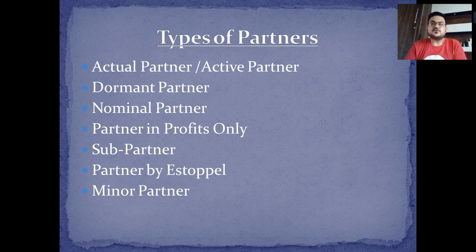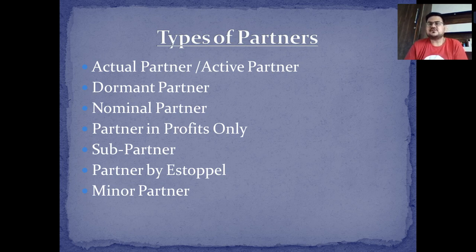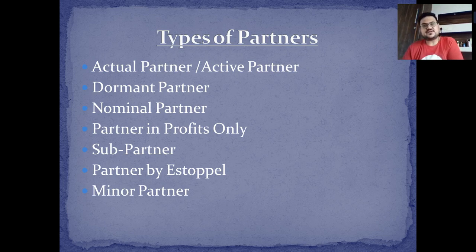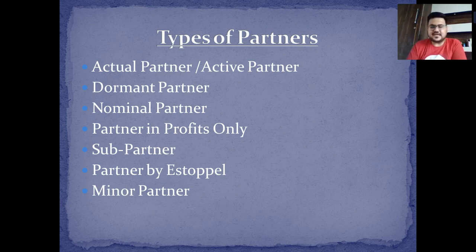A partner for profits only is taken into the business and receives a share only when there is a profit; if there is a loss, he does not bear it. A sub-partner is usually a minor person under 18 years old who gets an opportunity, or a substitute partner. A partner by estoppel is a situation where someone acts as a partner — such as managers who take decisions in front of customers and vendors and act as partners. A minor partner is someone below 18 years old.